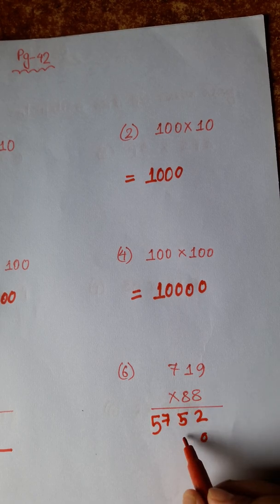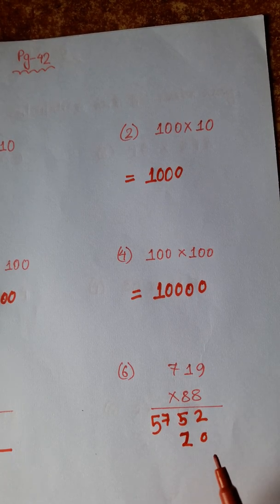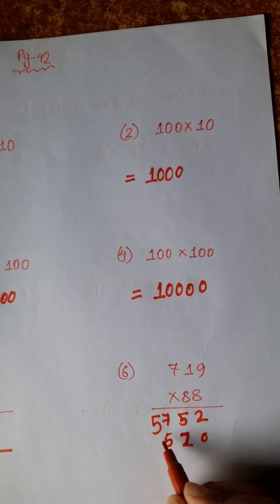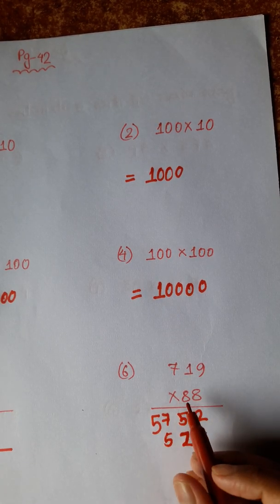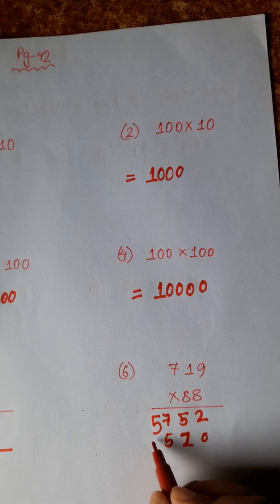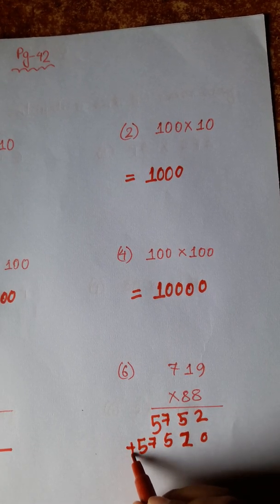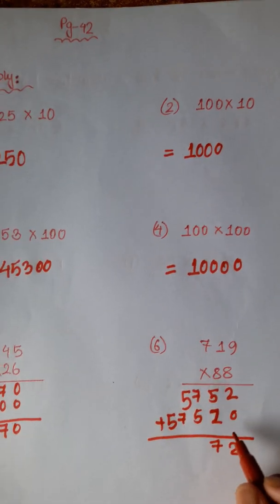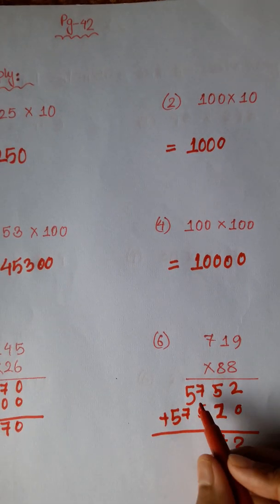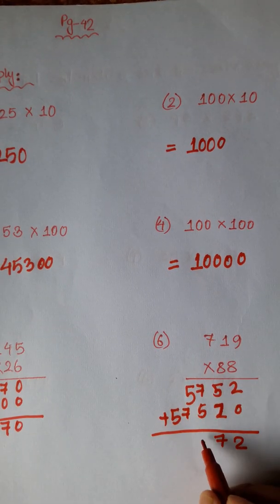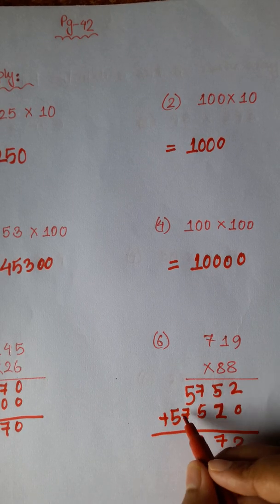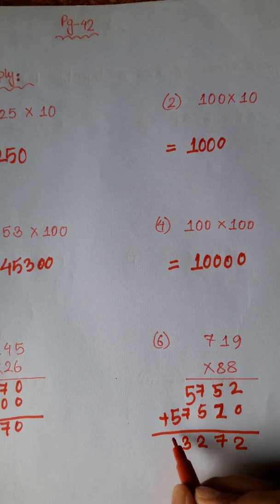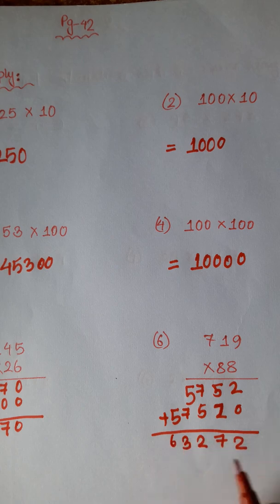8 nines are 72, carry 7. 8 ones are 8 plus 7 is 15, carry 1. 8 sevens are 56 plus 1 is 57. 2, 5 plus 2 is 7. 7 plus 5 is 12, carry 1. 7 and 1 is 8 plus 5 is 13, carry 1. 5 plus 1 is 6.